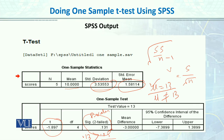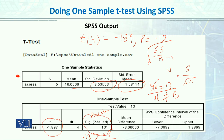So aap iske andar, jab aap reporting karenge is value ki, aap likhenge t italicized, aapne degrees of freedom deni hai kyunke humaari five values thin, so five minus one equals four. So t(4) is equal to minus 1.89, aur aap comma daalenge, aur p likhenge — p is equal to .13. Aur phir aap neeche likhenge ki results are not significant, so we fail to reject the null hypothesis, jis ka matlab hai ki sample ka population ka mean 13 hai.